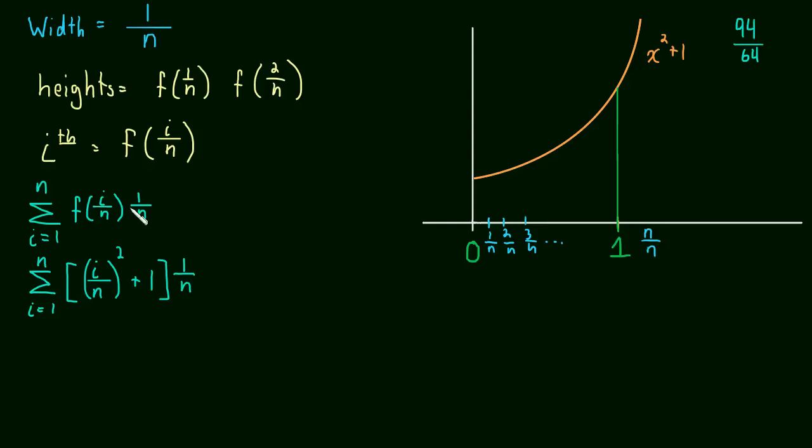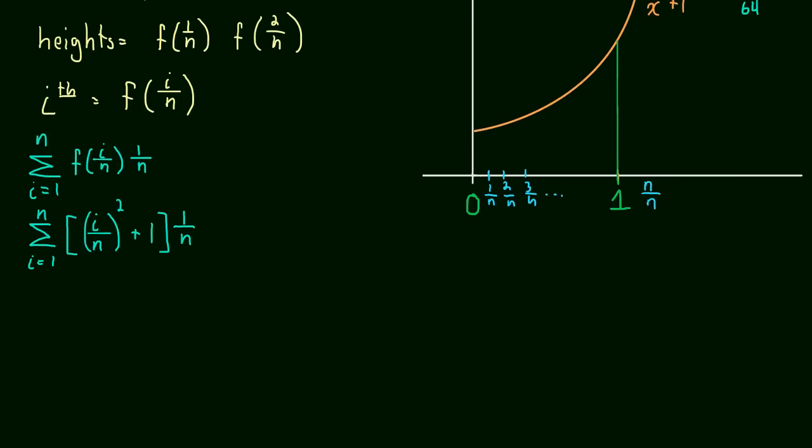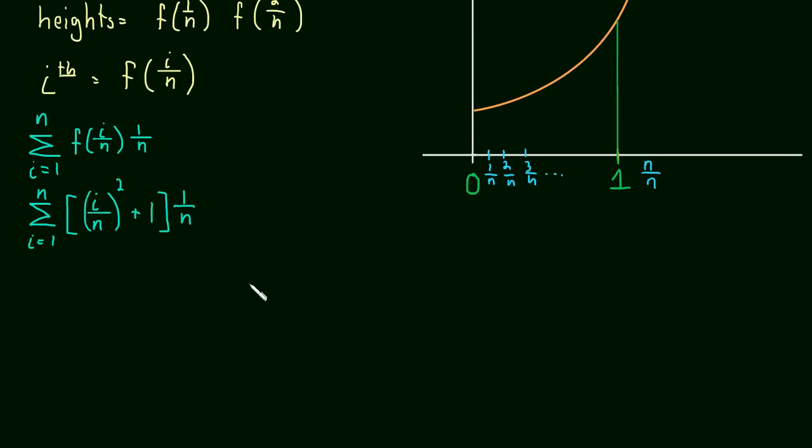So all we're doing is height times width, height times width, height times width. We're just summing up the height of all the rectangles, or the height times the width of all the rectangles, or the area of all the rectangles. Okay, so don't get lost in these i's and n's, it's just area, height times width.